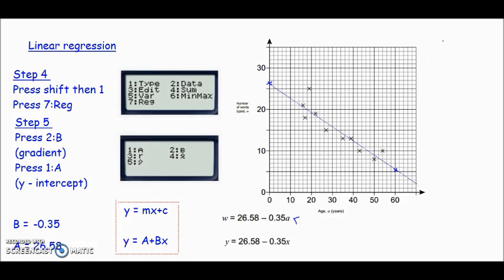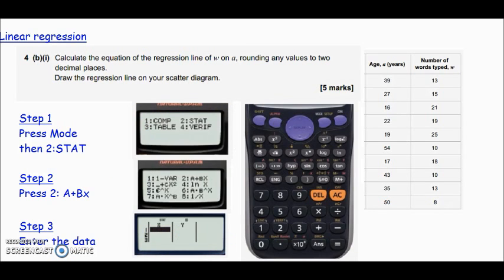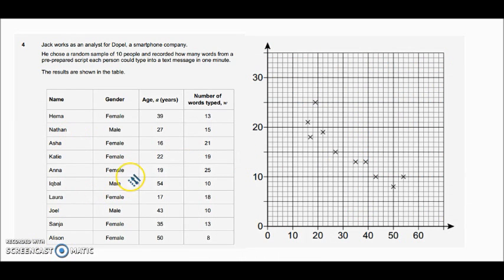Part C, the final bit, says suggest two improvements which Jack could make to his process of collecting the data. I would go back to part A and have a look at the experiment and see if you can think of two ways he could improve it. Pause the video, look at the table and try to write down two things that you think he could do to improve. Then I'll bring up the mark scheme.